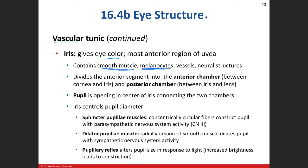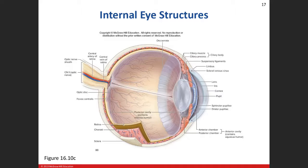The iris physically divides the anterior cavity into the anterior chamber and the posterior chamber. The anterior chamber is everything in front of the iris — from the cornea back to the iris. The posterior chamber is from the iris to the lens.